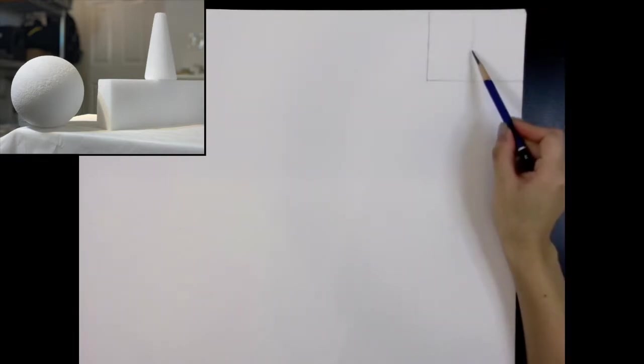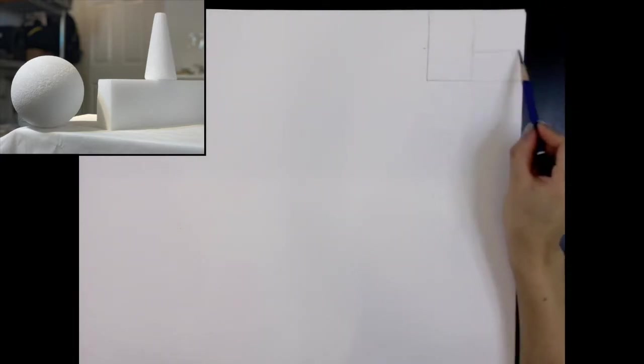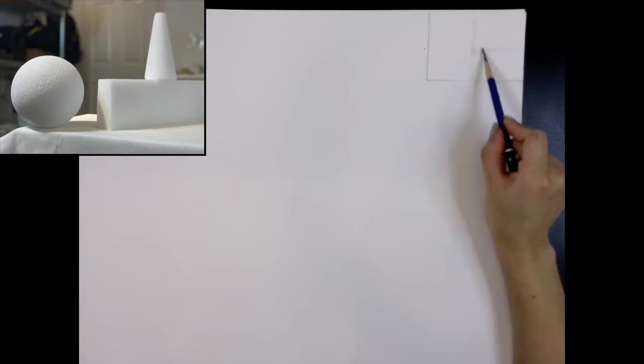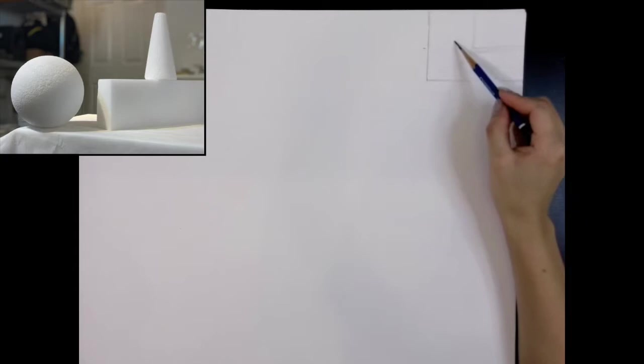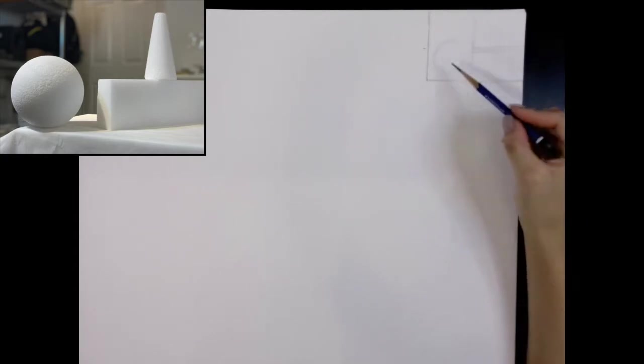So for this exercise, I want you to start with a thumbnail sketch in the corner. You can do this in any corner of the page, wherever you feel like is most appropriate. Using the siding technique, which is the structural lines, structural mappings, and angle measurements, quickly jot down the objects in your composition.